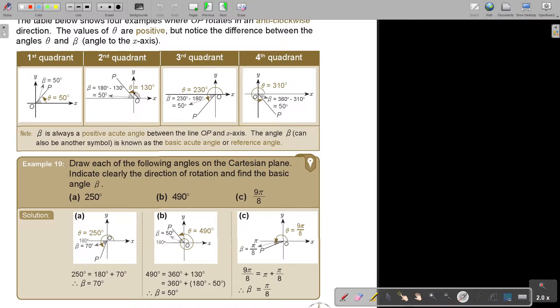This one, 230, so I pass 180, and if I say 230 minus 180, I see that the angle towards the X axis is 50. And then 310, that's beta, but the angle towards the X axis is 50.